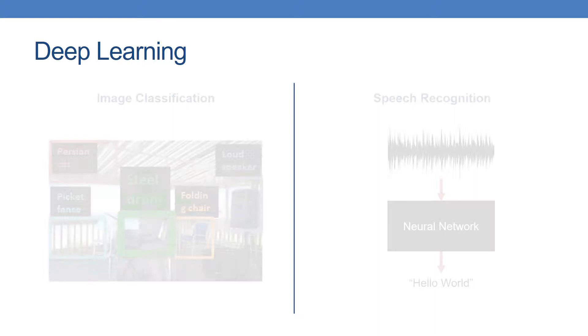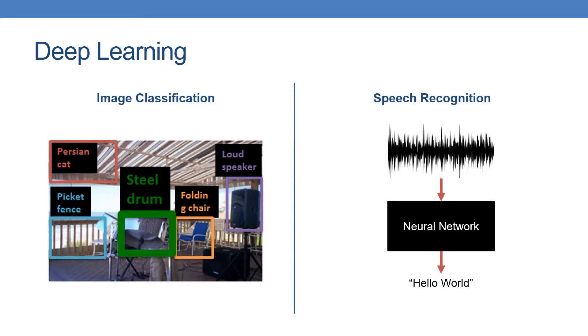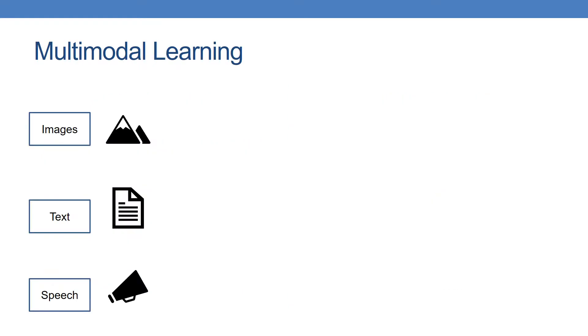Deep learning has achieved state-of-the-art results in image classification and speech recognition. Going forward, new models will combine enormous amounts of data from multiple domains.